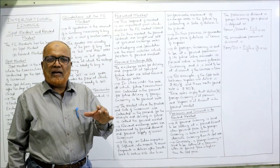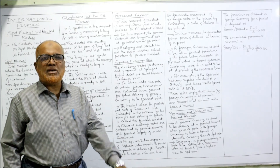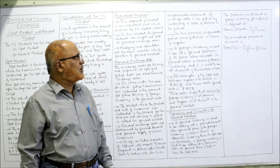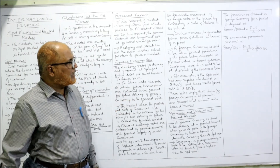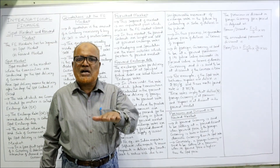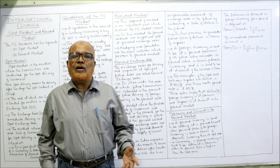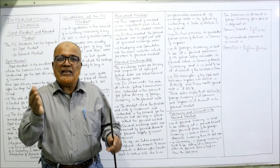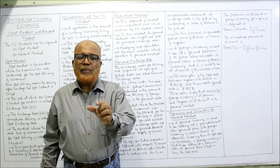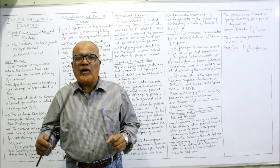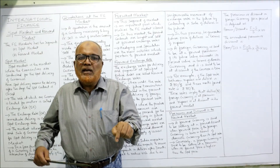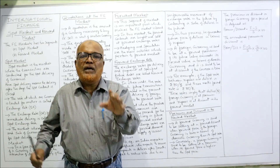By entering this contract, the exporter guarantees the future price of dollars in terms of rupees and knows exactly how much he will receive. A foreign currency is said to be at a forward premium if its future value exceeds its present value in terms of domestic currency, and at a discount if the converse is true. For example, if the spot rate is 80 rupees per dollar and the forward rate is 85 rupees per dollar, the forward rate is higher, so the dollar is going at premium.